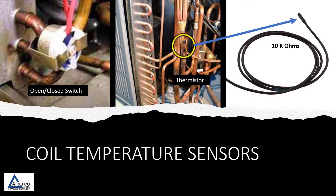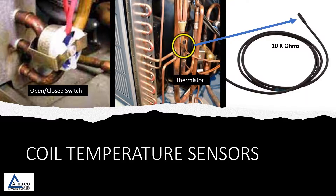The outdoor coil temperature is what drives the defrost cycle — it tells the defrost control board that the coil is cold enough to freeze up and needs to go into defrost. This coil temperature is sensed by two different devices. The first is a klixon switch, which is normally open and closes when the coil reaches a certain temperature, signaling the defrost board to initiate defrost. The second is a 10k resistance thermistor on the right, which also senses coil temperature. Both devices should be checked during troubleshooting to ensure the klixon switch closes when it should and the thermistor is within range.